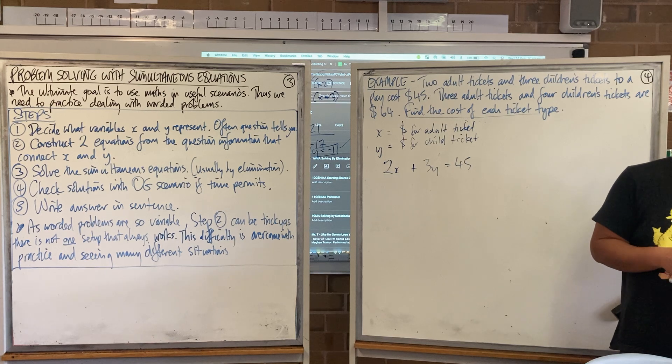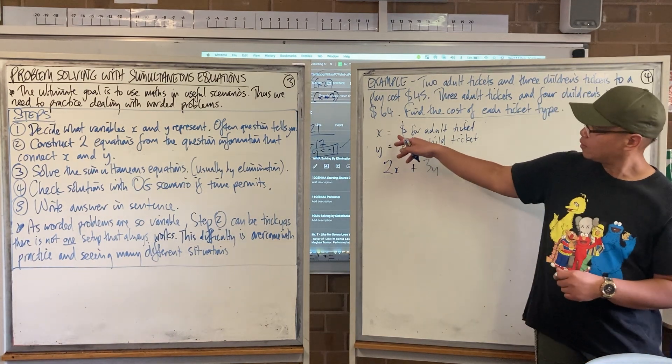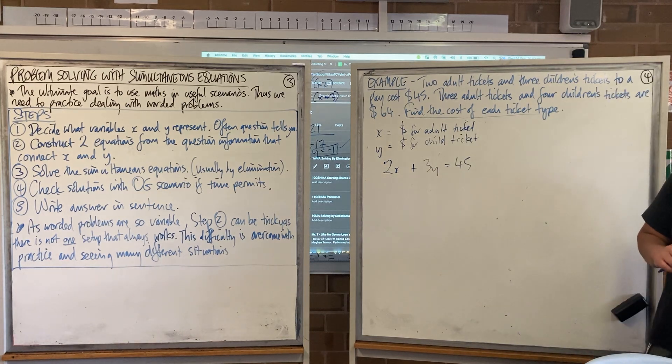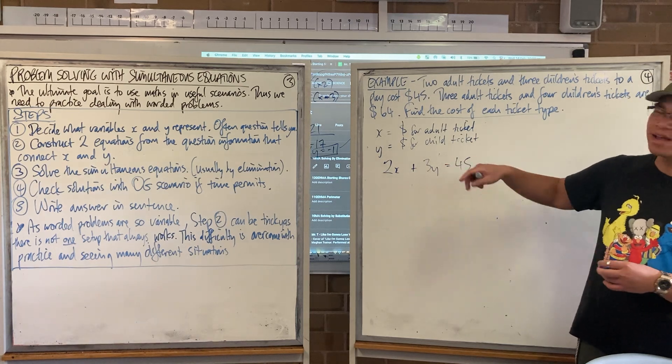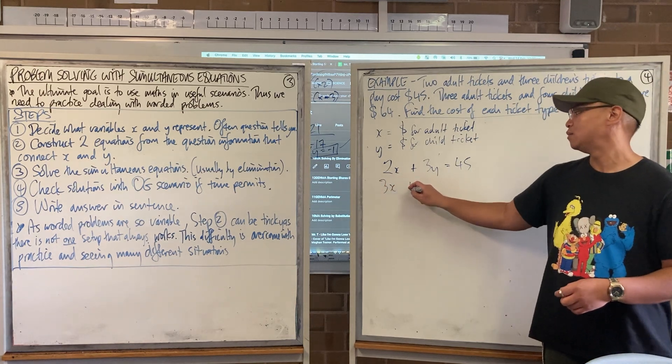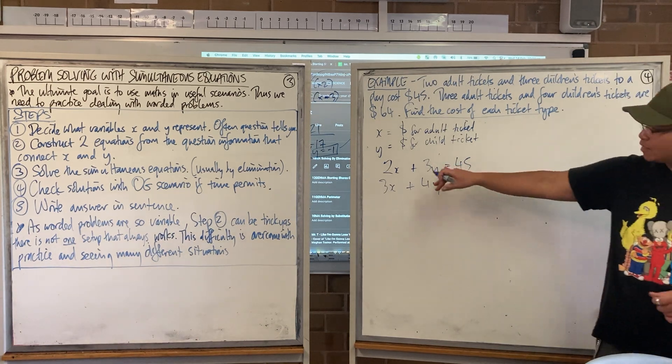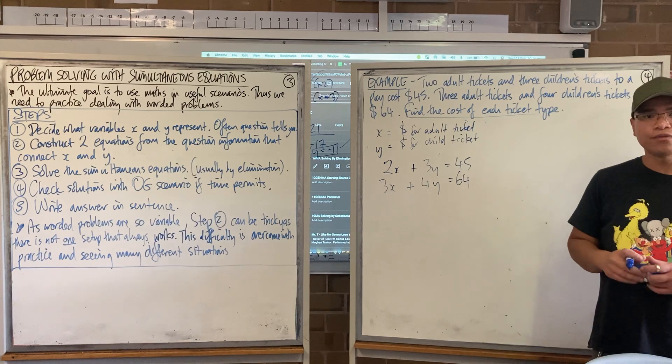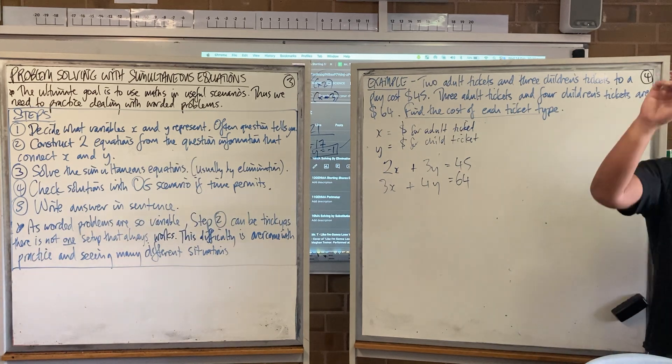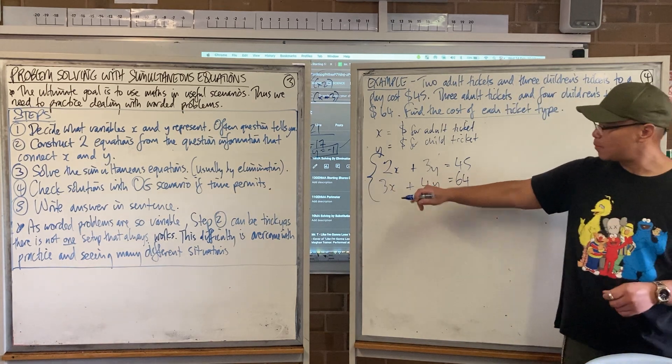Can someone else help me? What would the second equation be for the second scenario? 3x plus 4y equals 64. Excellent. Are these both equations relating to the same two variables? How do I show that? What do I draw? I'll do a little curly bracket there. They're simultaneous equations.